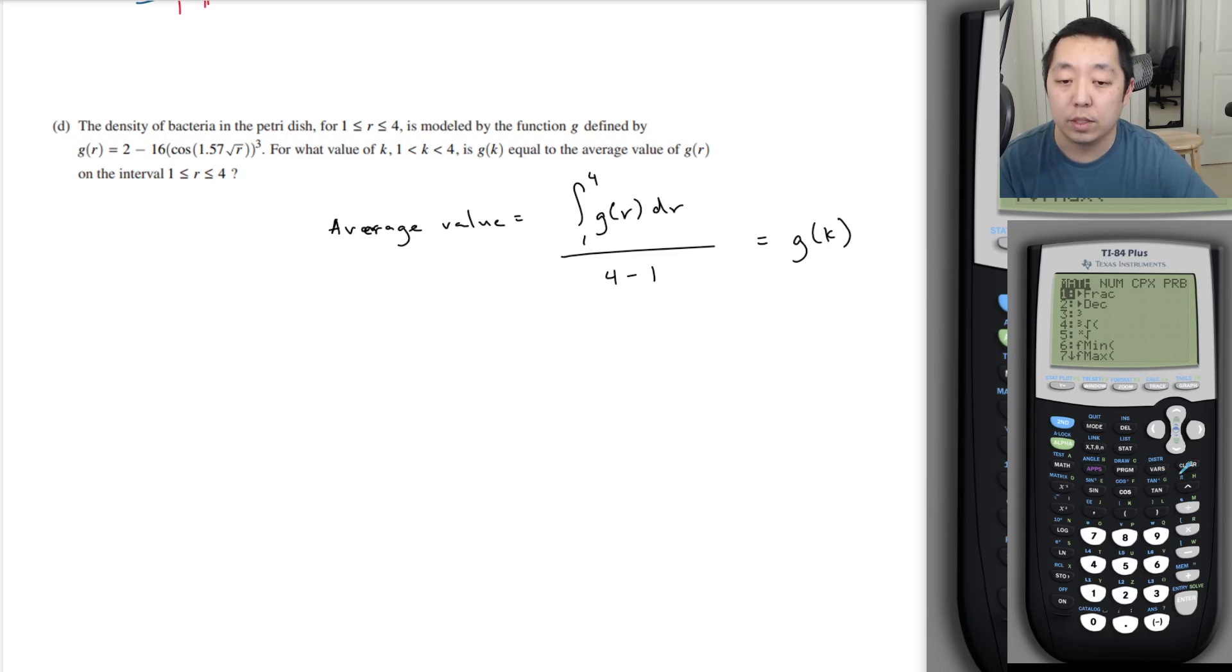Like what value of k is g of k equal to this? So let's do this left part first by doing our integral. So let's see. I'm going to do math. Well actually, it's okay. I'll just do it the long way. Function integral I'm going to do from 1 to 4 of this function, which is 2 minus 16 cosine 1.57 square root of x. Let's see. Then I got to do, okay, I got to double check. That closes the cosine. Oh, I needed to put a parentheses before here. So second insert parentheses. I'm going to close that, raise it to the cube, and that closes the integral, and then dx. Let's see what this is. So take that, divide it by 3.